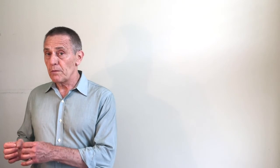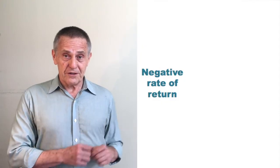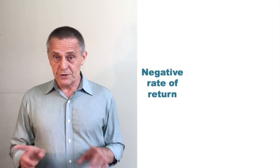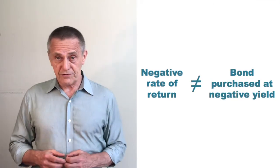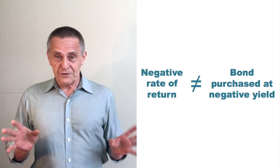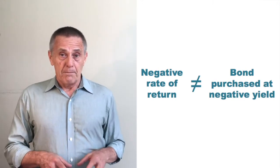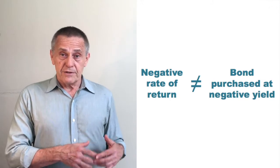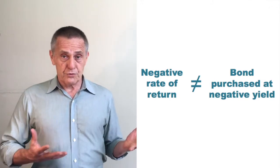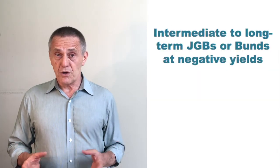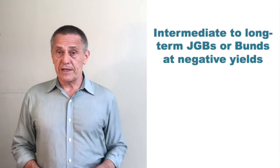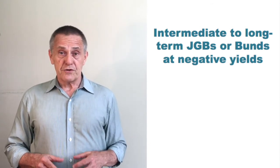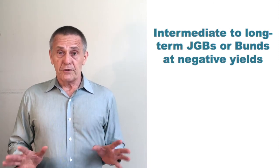However, what about intermediate to long-term treasury or government securities at negative interest rates? Surely one wouldn't want to buy a 10-year JGB or a 10-year Bund and lock yourself into a negative rate of return over the 10 years to maturity. Now, I'm mixing apples and oranges there because negative yields are not the same thing as negative rates of return — if that's a topic of interest, check out our video on that topic. The reason a negative yield is not a negative rate of return is because the rate of return to maturity depends on the reinvestment income and all the cash flows received prior to maturity. And realize that investors buying 10-year JGBs or 10-year Bunds at negative yields were not buying them with the intent of locking in a negative rate of return over the 10 years to maturity.